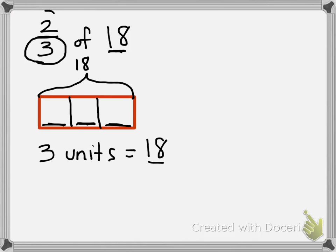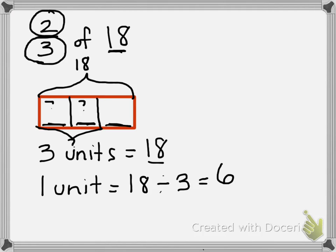But again, we need to look at our numerator to tell us how many parts they want us to find. Well, they're asking us to find two parts. So I need to find the value of these two parts. So I need to find the value of 1 unit before I can even begin. 1 unit equals our whole number of 18 divided by our parts, which are 3. And 18 divided by 3 equals 6. So I know that 1 unit equals 6.